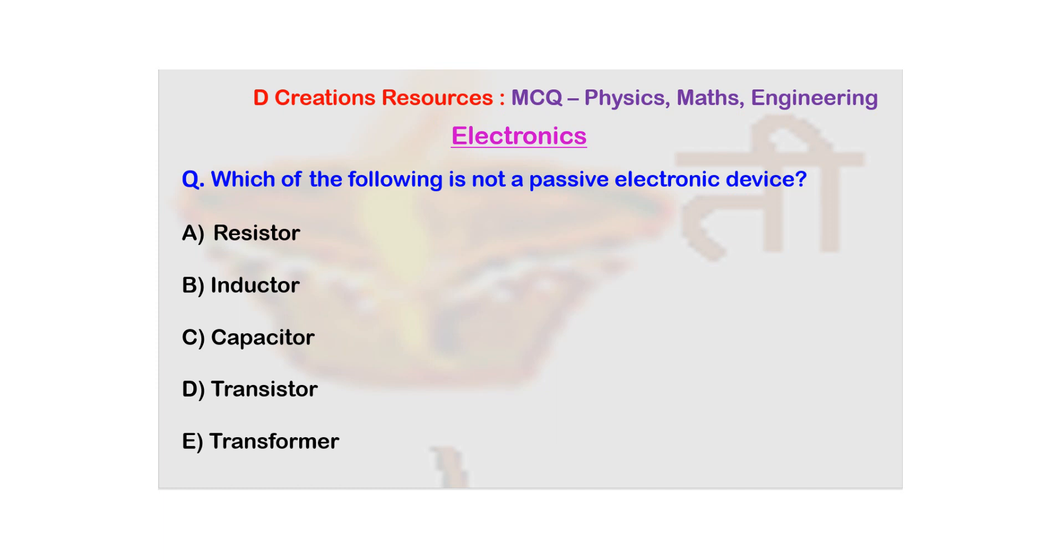The options given here are option A resistor, B inductor, C capacitor, D transistor and E transformer.